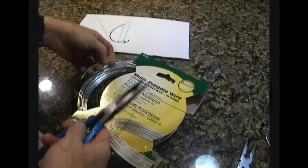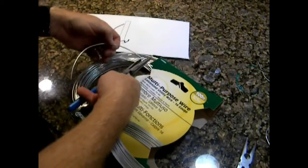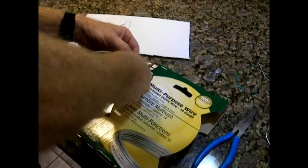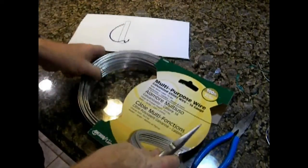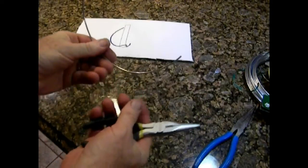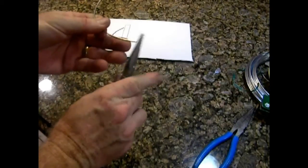The only problem with these commercially available hooks is that whenever I'm hanging a picture, I just don't seem to have one or can't find them. What I did have was some multi-purpose wire. This is 14 gauge, so it's fairly stiff, and I decided to just make up a few of my own.